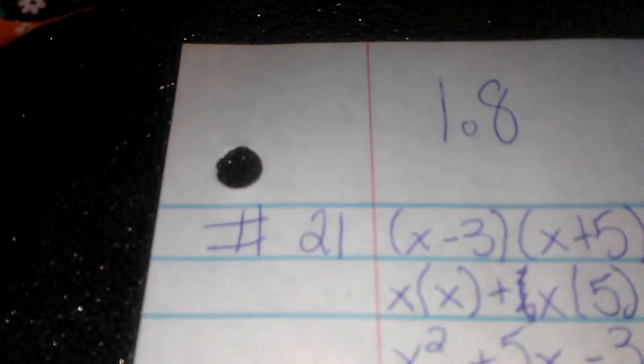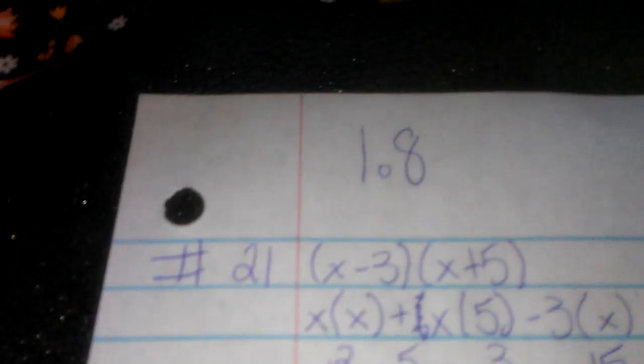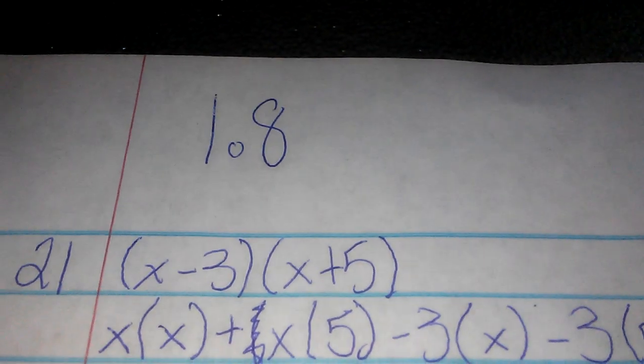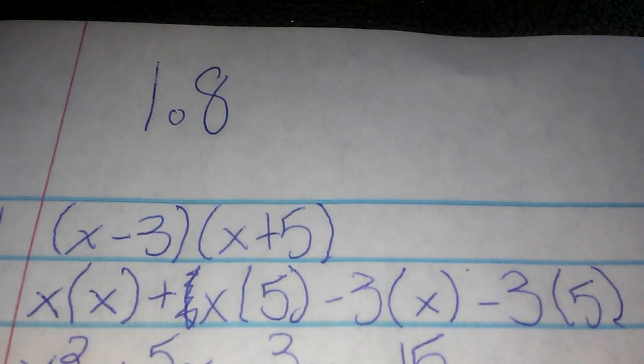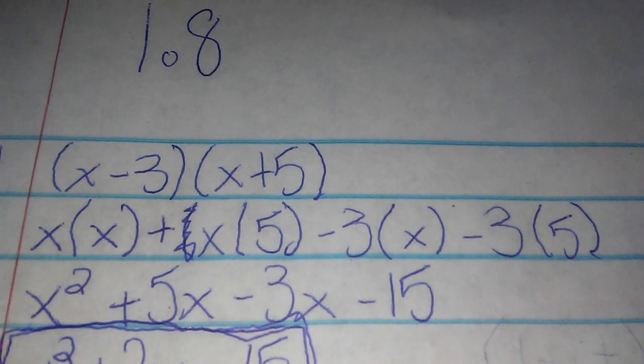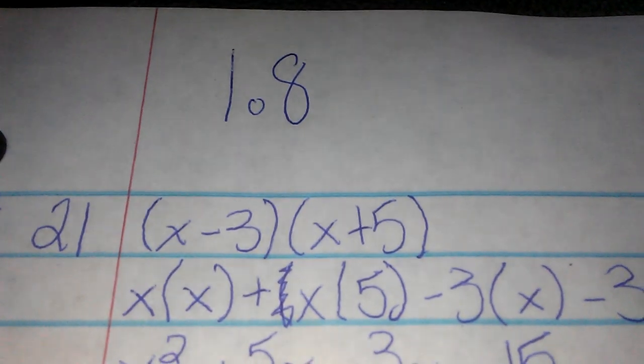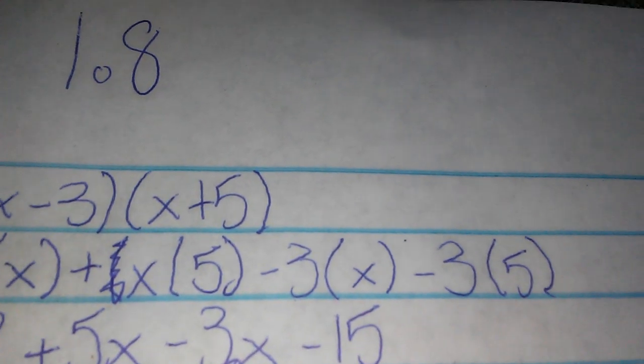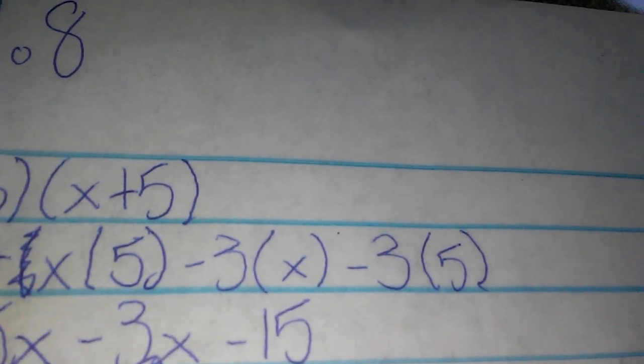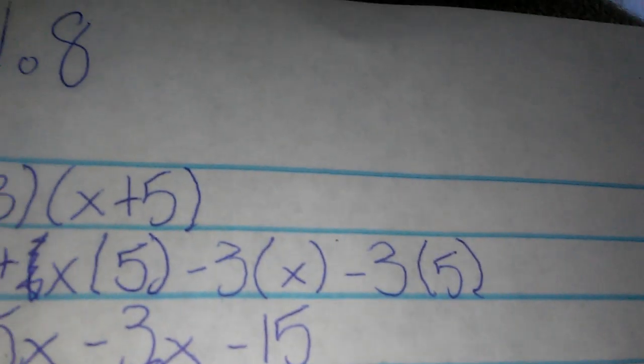The question I chose for 1.8 was number 21, which was (x - 3)(x + 5). So what I did is I used the FOIL method, so I took x times x plus x times 5 minus 3 times x minus 3 times 5.